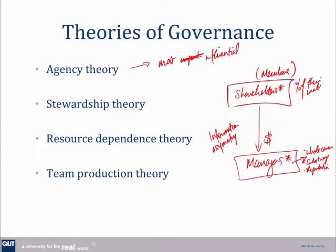For a shareholder, it's only a percentage of their wealth. It might be a lot of money, but generally it's only a percentage of their wealth. So the interests of these two parties aren't aligned. And because of this information asymmetry, managers can pursue their interests, not the actual shareholders' interests. This creates something called agency costs.